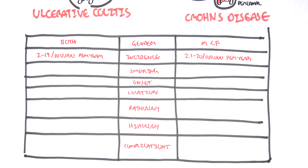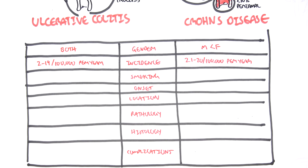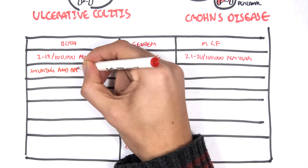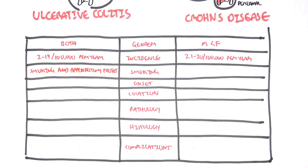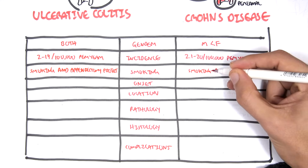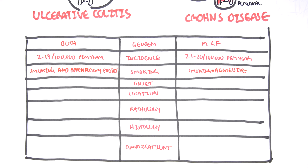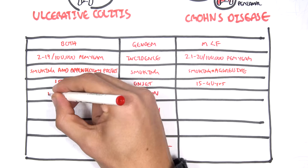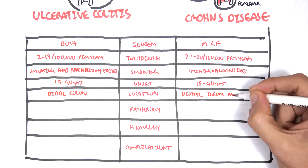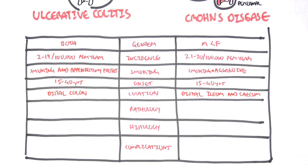Smoking is very interesting in inflammatory bowel disease: for ulcerative colitis, smoking is actually a protective factor, whereas in Crohn's disease, smoking aggravates the condition. The onset of ulcerative colitis and Crohn's is roughly the same. The location for ulcerative colitis is mainly the distal colon — the rectum and sigmoid area — and for Crohn's it is the distal ileum and cecum, though it can affect other areas along the GIT.